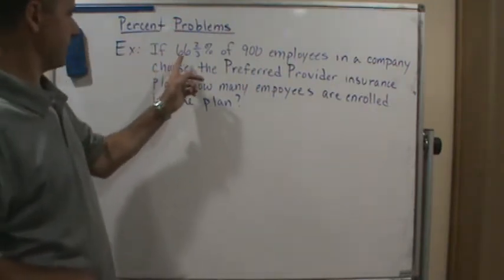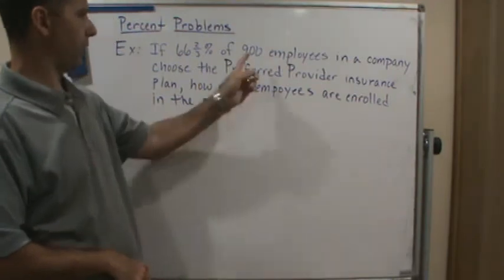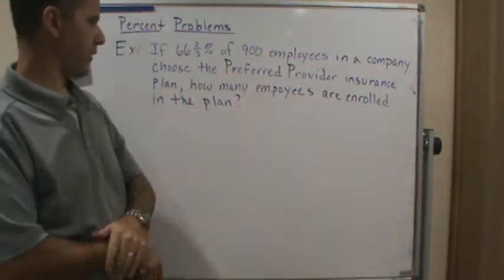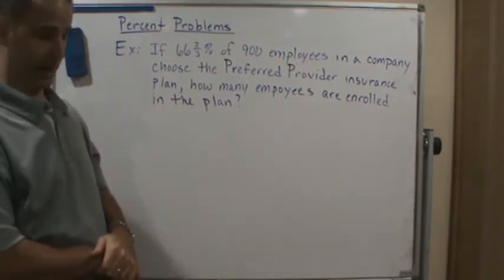It says, if 66 and two-thirds percent of 900 employees in a company choose the preferred provider insurance plan, how many employees are enrolled in the plan?